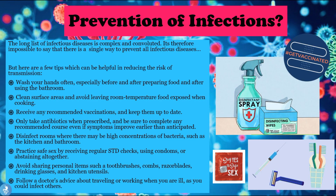Now let's briefly talk about how one can prevent an infection. The list of infectious diseases is complex, so there's no single way to prevent all of them, but here are a few tips. Wash your hands often, especially before and after preparing food and after using the bathroom. Clean surface areas and avoid leaving room-temperature food exposed when cooking. Receive any recommended vaccinations and keep them up to date. Only take antibiotics when prescribed and be sure to complete any recommended course, even if symptoms improve earlier than anticipated.